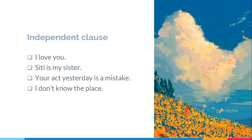The position of an adverb is actually mobile — it can be at the end, at the beginning, or in the middle of a sentence. So: 'your egg' is subject, 'yesterday' is adverbial, 'is' is verb, and 'mistake' is complement. The last example, 'I don't know the place': 'I' is subject, 'don't know' is verb, and 'the place' is object. These four sentences have complete thought and don't need other elements to be sentences.